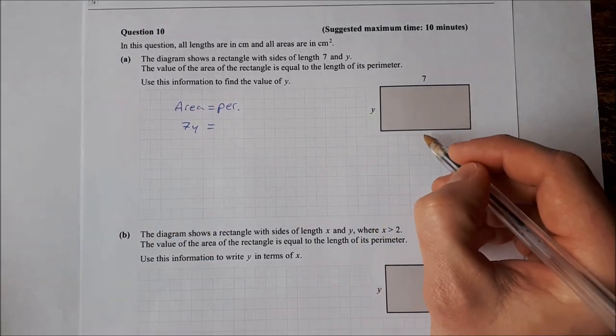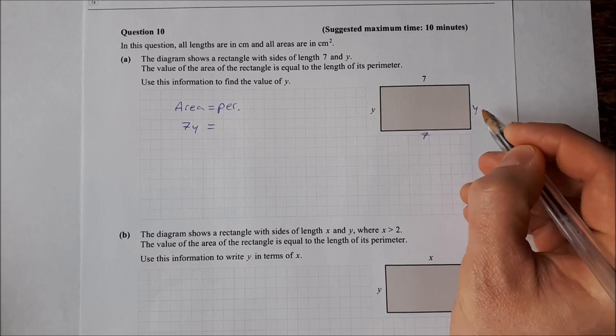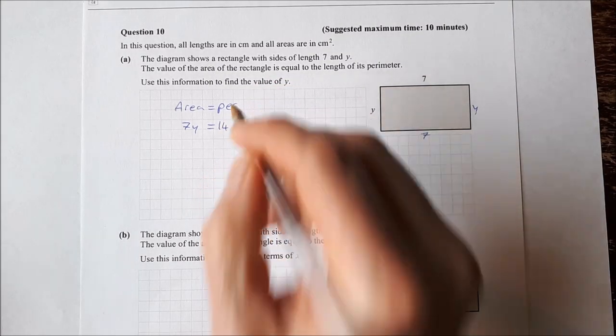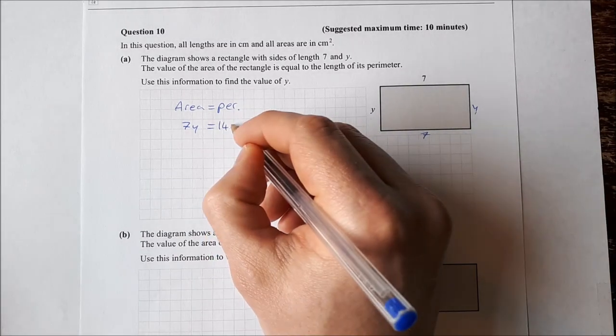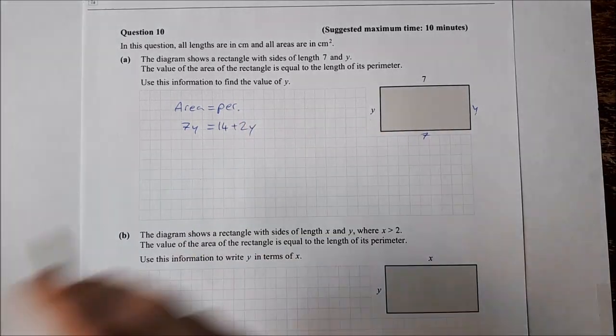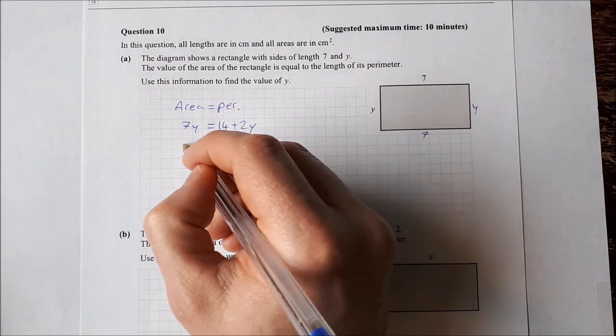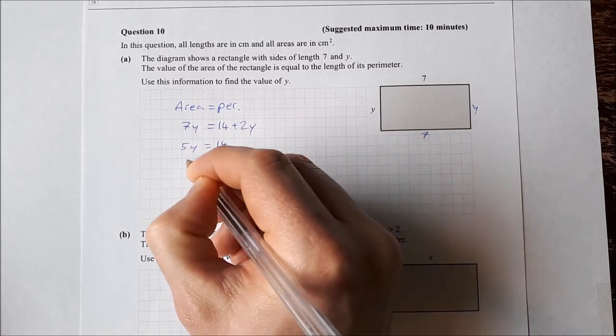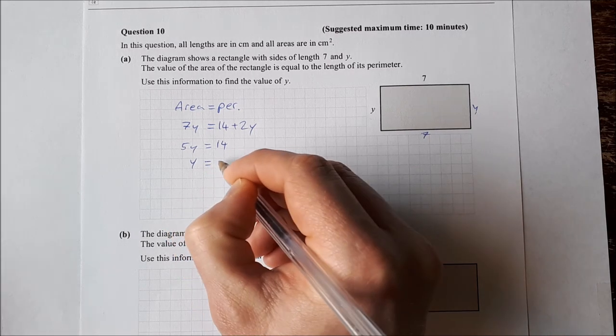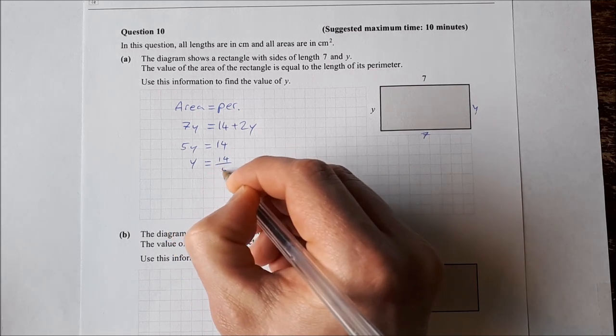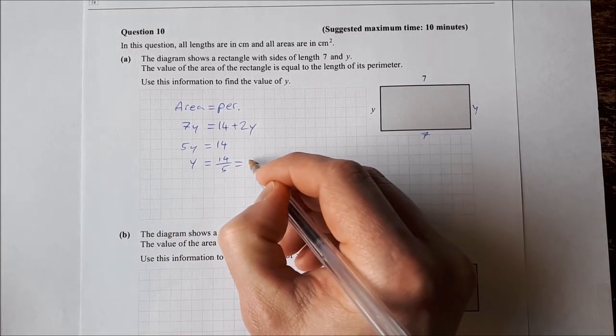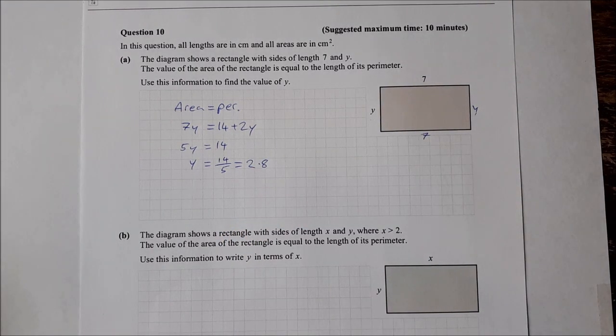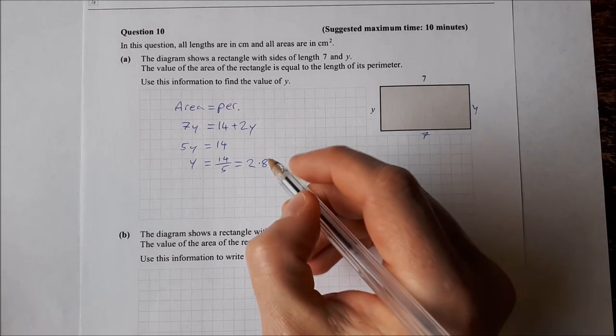So I have another 7 here and I have another y here. So that's 7 and 7 is 14, and y and y is 2y. So, simple equation. Take 2y from both sides to get 5y equal to 14. And then divide both sides by 5 to get y is equal to 14 over 5. If you want to write that as a decimal 2.8. So that would be 2.8 centimeters.